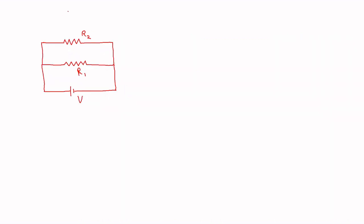Coming to current division rule, I am using this circuit for demonstrating it. To analyze this circuit, I am placing the nodes involved. There are two nodes here, node 1 and node 2. You can see that the supply V as well as R1 and R2 are all connected between these two nodes, which means that the three elements are connected in parallel.